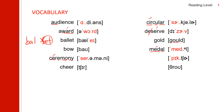Next one: picture. P-I-C-T-U-R-E. Picture. The last one: throw. T-H-R-O-W. Throw. Vocabulary review: audience, award, ballet, bow, ceremony, cheer, circular, deserve, gold, medal, picture, throw.